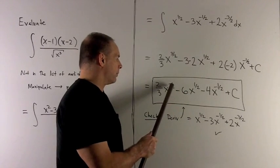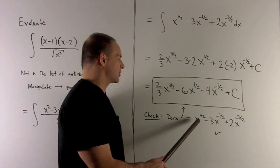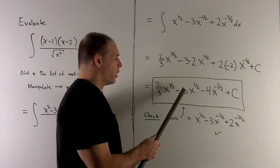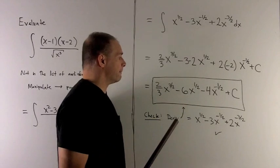So we take the derivative of this function. We expect that it will equal this. So let's check. I bring my 3 halves down. Subtract 1 from that. Gives me x to the 1 half. I bring the 1 half down. Gives me minus 3. Subtract 1 off of that. Gives me minus 1 half.